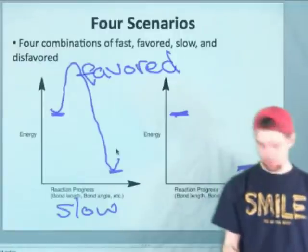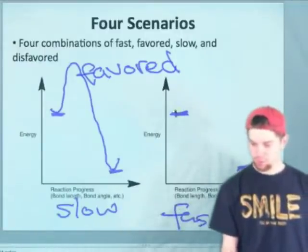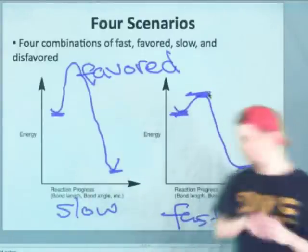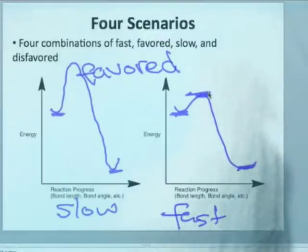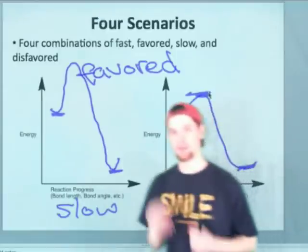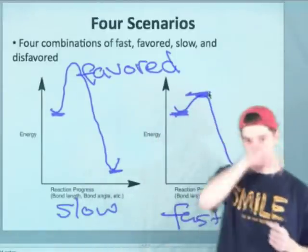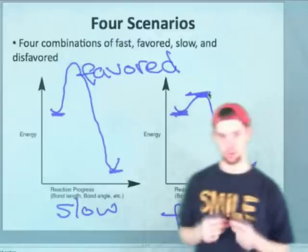On the other hand, for a favored but fast reaction, we have the situation now where the kinetic barrier is very small. The difference between the transition state and the reactants is very small. In this case, we would have a very favorable, very fast reaction. A number of reactions exhibit this property for a reason that we'll discuss in an upcoming lecture called the Hammond Principle or the Hammond Postulate.